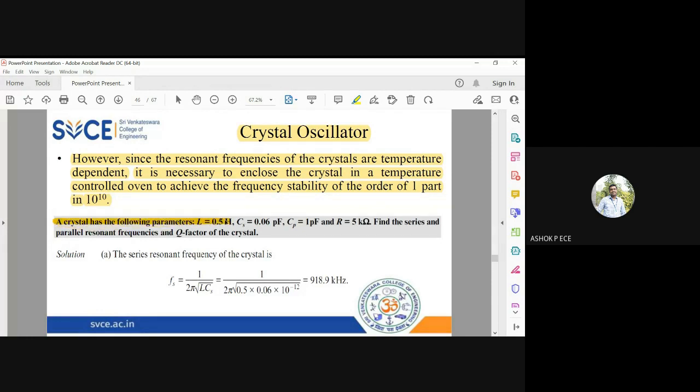L is 0.5 mega Henry. Capacitance CS is given. CP is given. You can see how much CP is larger when compared to CS. And R value is 5 kilo ohm. Find the series and parallel resonant frequencies and the Q factor.